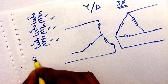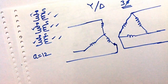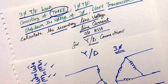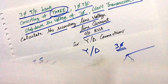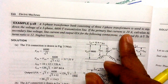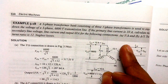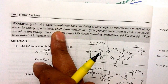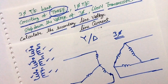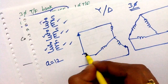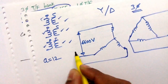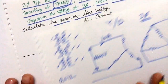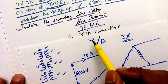The turns ratio is given as 12. The primary line-to-line voltage is 6600 volts and the primary line current is 10 ampere. We have to calculate the secondary line voltage, secondary line current, and output KVA.